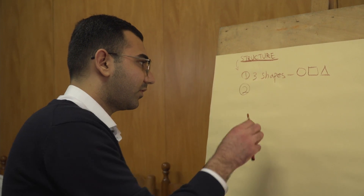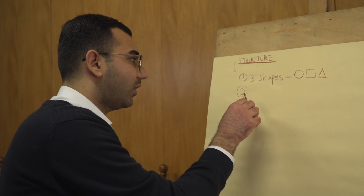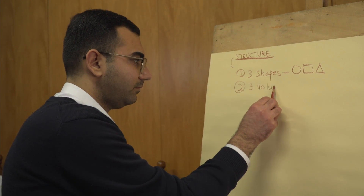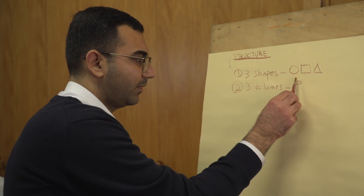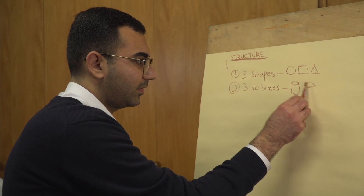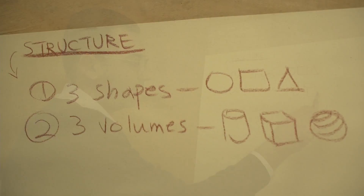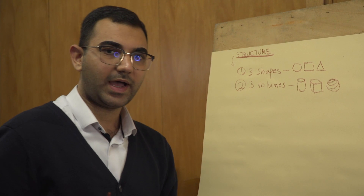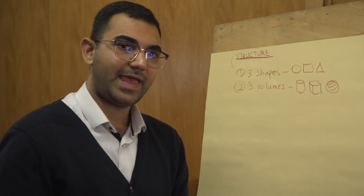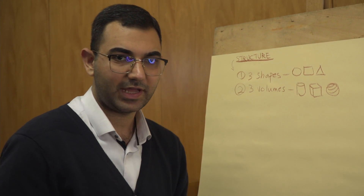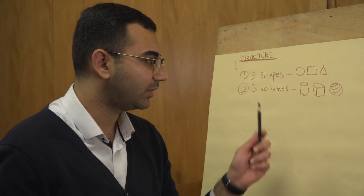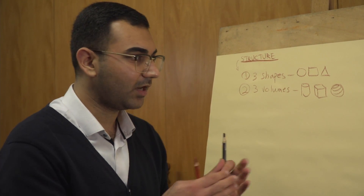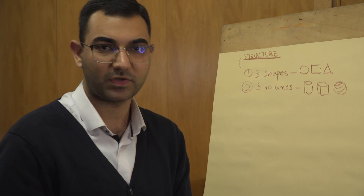The second important thing is volumes. We have three important volumes: cylinder, cube, and sphere. When you want to add more structure to a drawing, after adding gesture, you can add shapes and volumes. Now I want to show you the process of doing that.